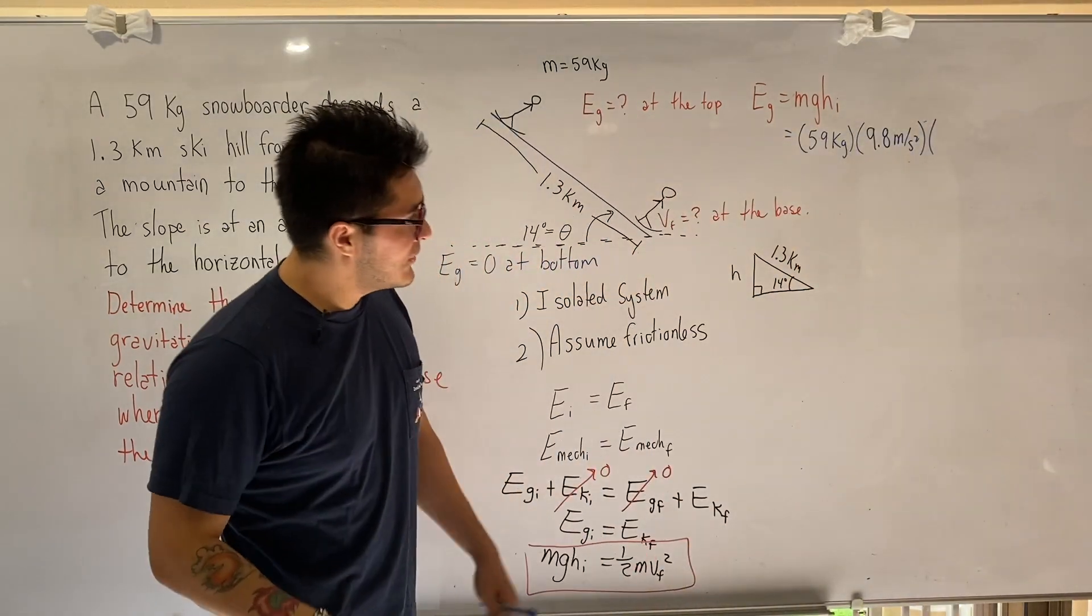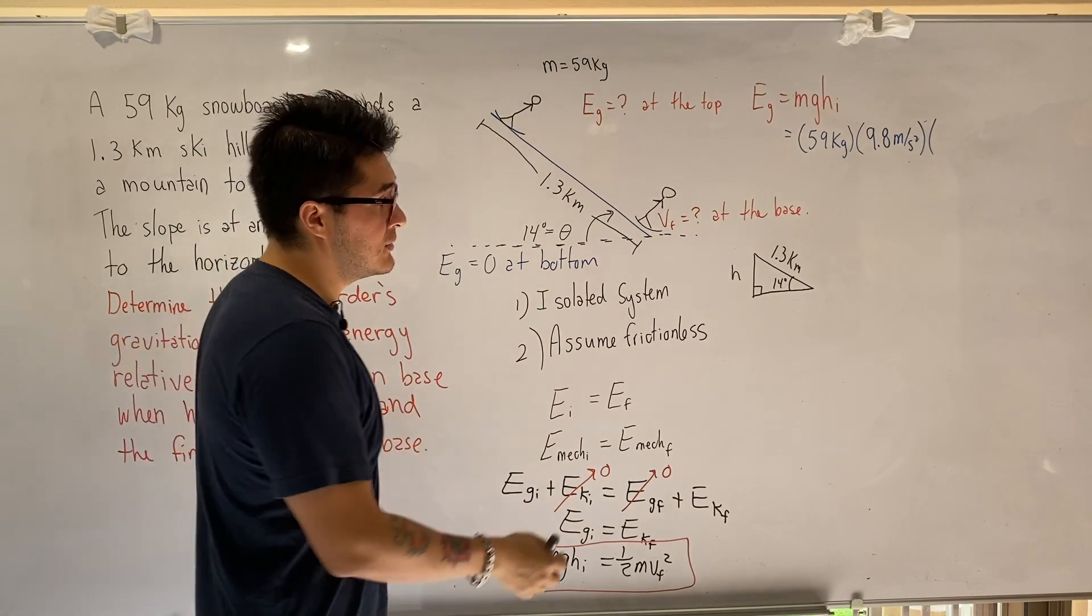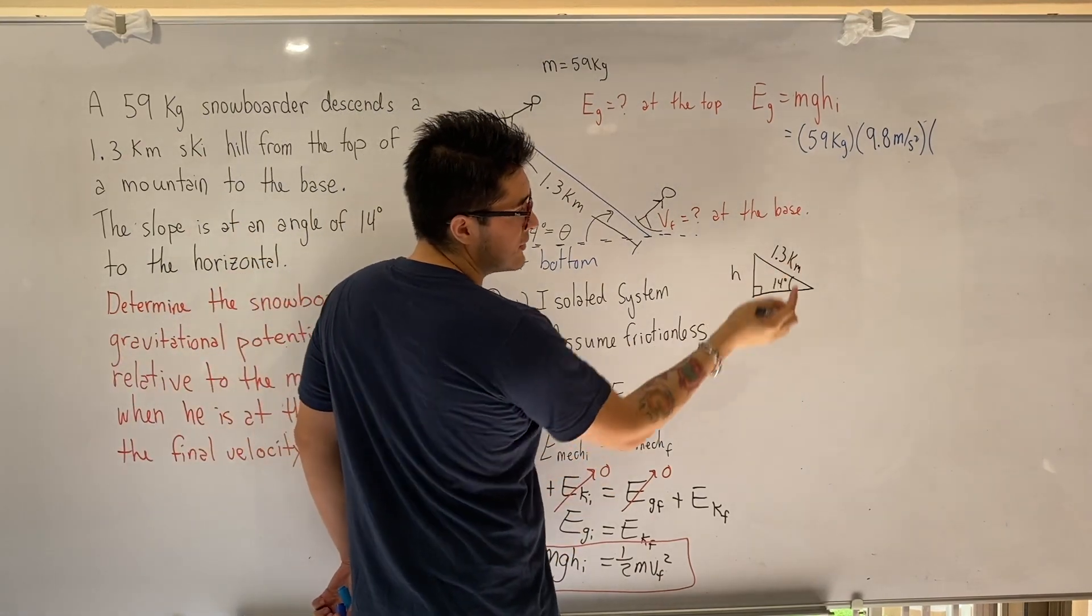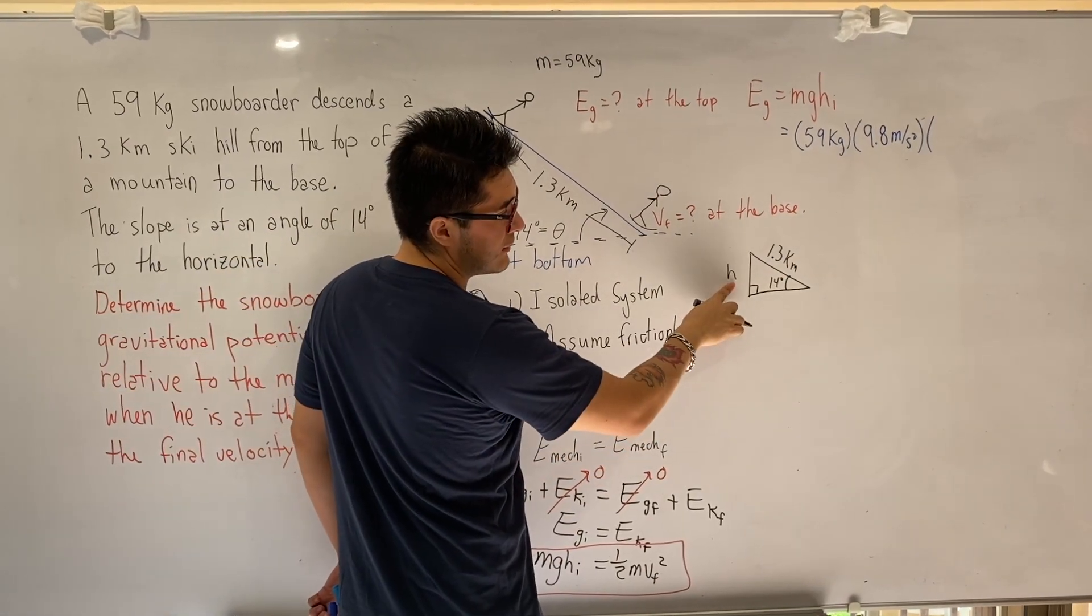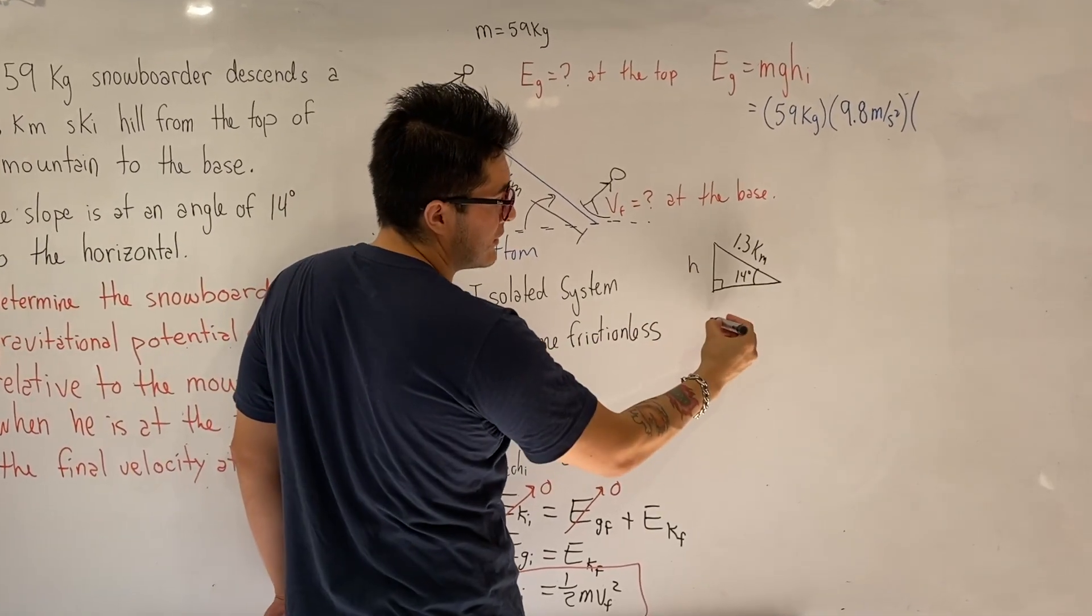We already studied that from before. Now we just have to apply simple trigonometry for right-angled triangles. We have hypotenuse. We're looking for the opposite side. So in this case, we can use sine ratio from SOH CAH TOA.